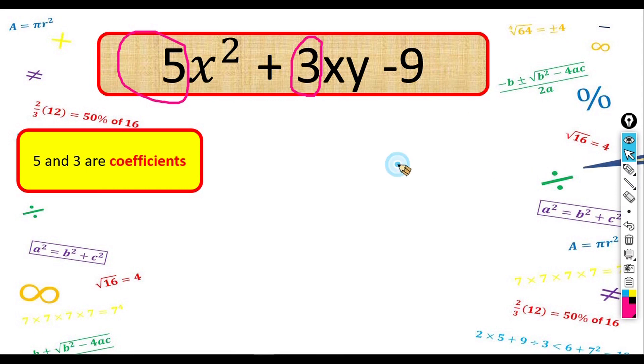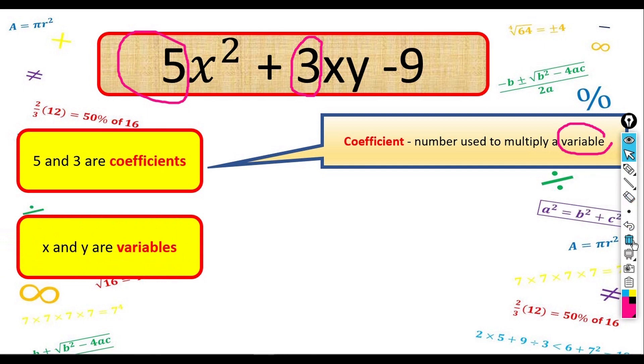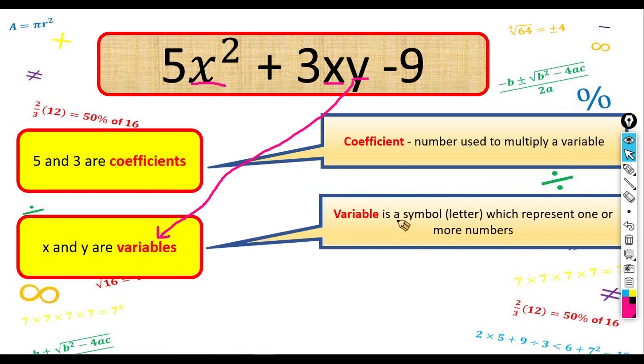What is coefficient? Coefficient is a number used to multiply a variable. What is variable? Let's look at it. X and Y are variables. This one, X and Y, they are variables. What is variables? Variable is a symbol, letter which represents one or more numbers.